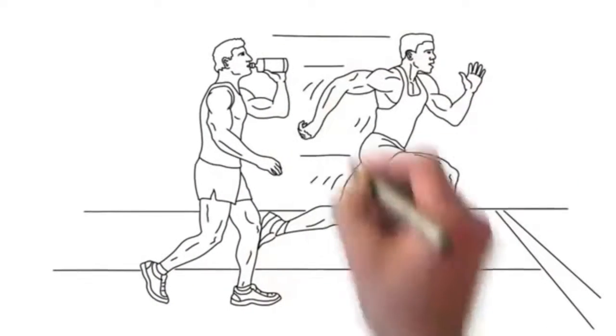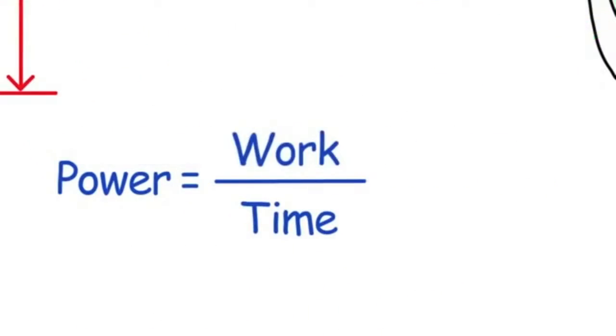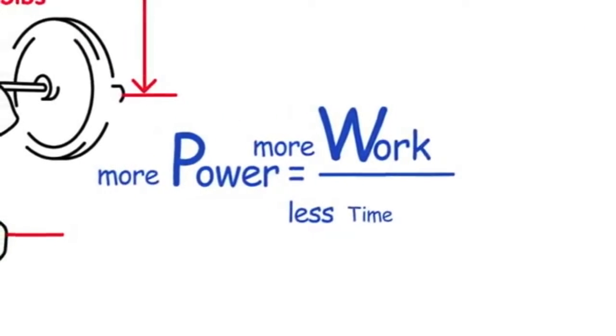Racing as fast as you can is harder and high intensity. Work is force times distance. Average power is work divided by time. The more work you do in less time, the higher the average power and the harder it is.